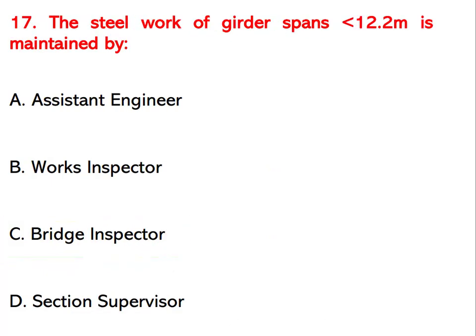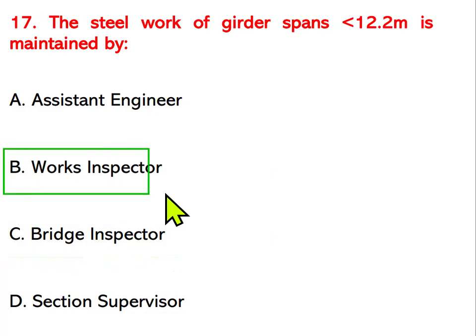The steel work of girder span less than 12.2 meters is maintained by which official? Options are assistant engineer, works inspector, bridge inspector, or section supervisor. The right answer is works inspector.